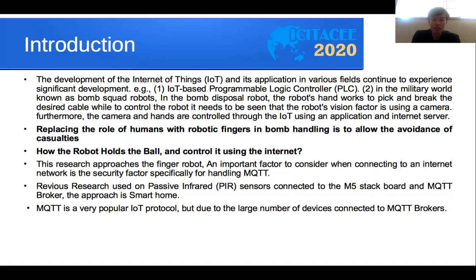This research can be applied to situations replacing the role of humans with a robotic finger in bomb handling, to allow avoidance of casualties, and to show how the robot holds a ball and is controlled using the internet. An important factor when connecting to the internet network is the security factor, specifically for handling MQTT.